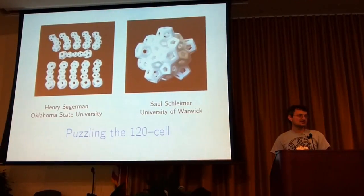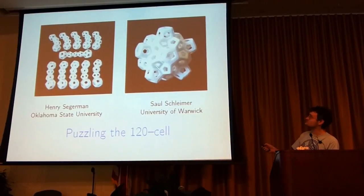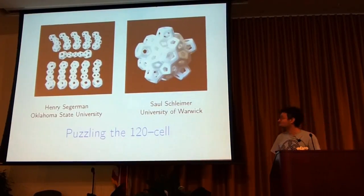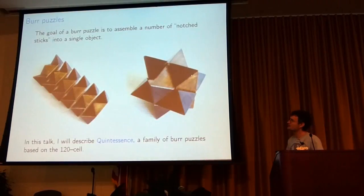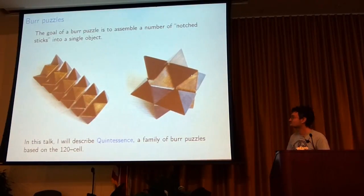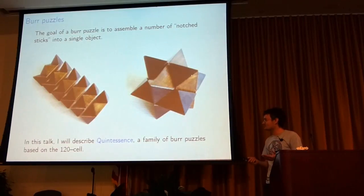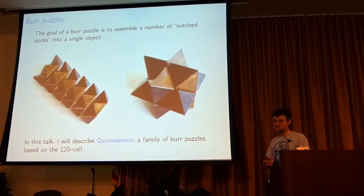This is a talk joined by a short time. We're making puzzles out of 120 cells, making burr puzzles to be specific. A burr puzzle has all these pieces with notches, and you have to put them together to form some sort of self-supporting structure, often a very symmetrical structure. I'm going to talk about a family of burr puzzles that we constructed based on the 120-cell, which we call Quitesis.